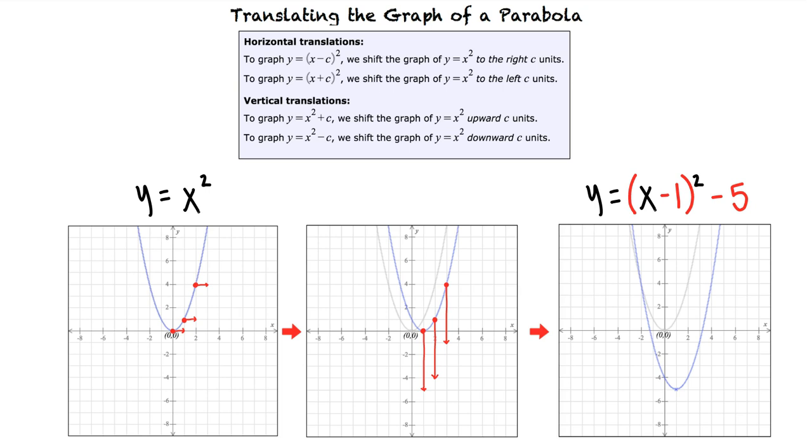I think I understand this topic. When translating the graph of a parabola, the addition or subtraction of a constant inside the parentheses results in a horizontal shift of the graph, and the addition or subtraction of a constant to the entire function results in a vertical shift of the graph. That's exactly right. Great work!